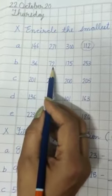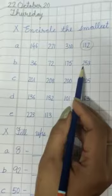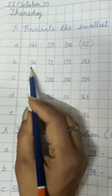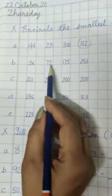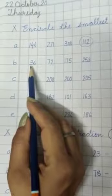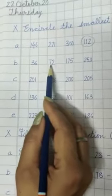36, 72, 175, 253. This is a 2-digit number, 2-digit number, 3-digit number, 3-digit number. So we have to check from 36 and 72.